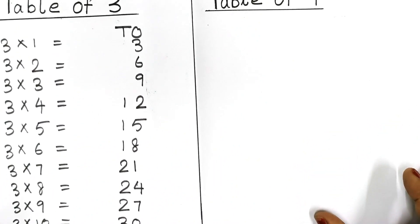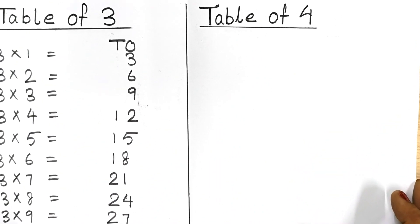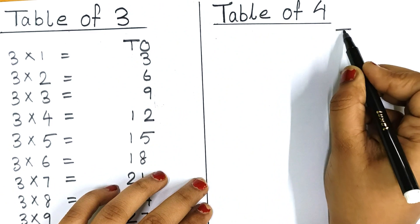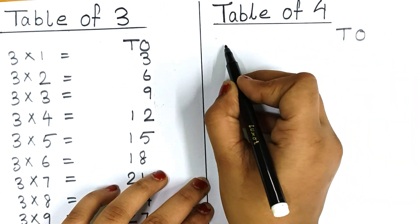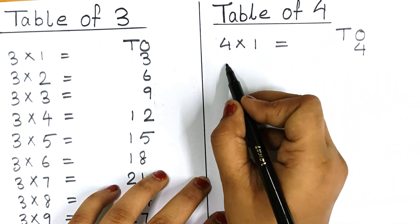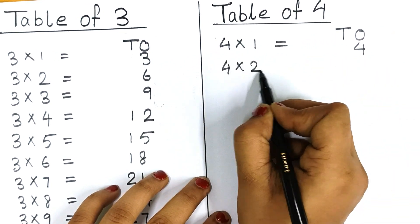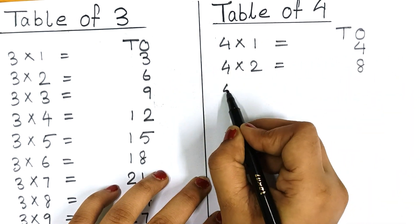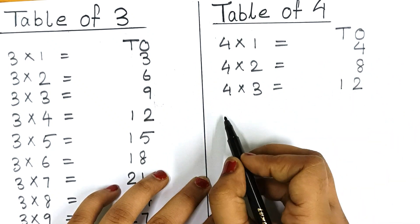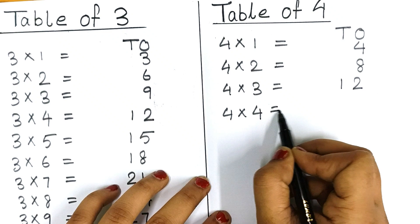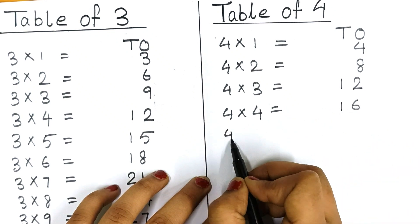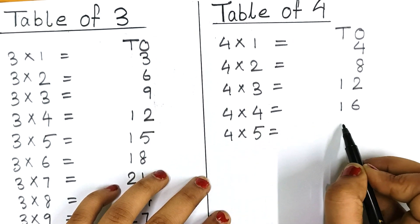Now let's start writing table of four. Write T.O. over here. Four one is four. Four two are eight. Four three are twelve. Four four are sixteen. Four five are twenty.